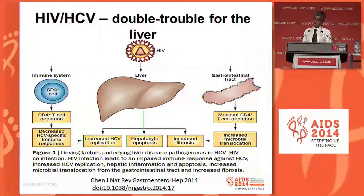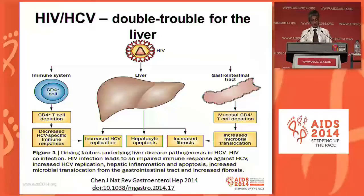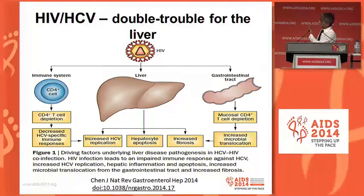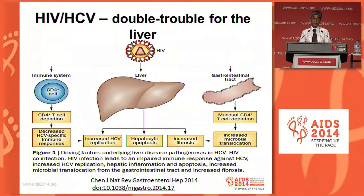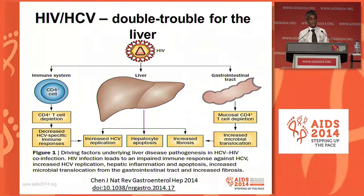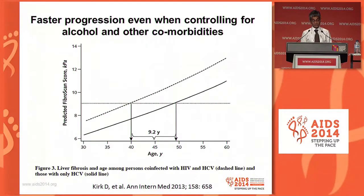Having the two viruses together is double trouble for the liver. HIV has a direct effect — causing hepatic apoptosis and stimulating hepatic stellate cells to produce fibrosis. It also has indirect effects: the mucosal T cell depletion in the gut is associated with large amounts of LPS in the blood, which also stimulates hepatic stellate cells. Additionally, there are decreased HCV immune-specific responses that increase HCV replication. Together, these lead to devastating liver disease.